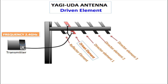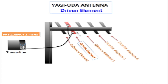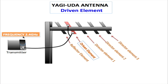A dipole antenna is most commonly used for the driven element. The first thing we need to do in designing this antenna is to find out what length the driven element should be in order to operate at a center frequency of 2.4 GHz.